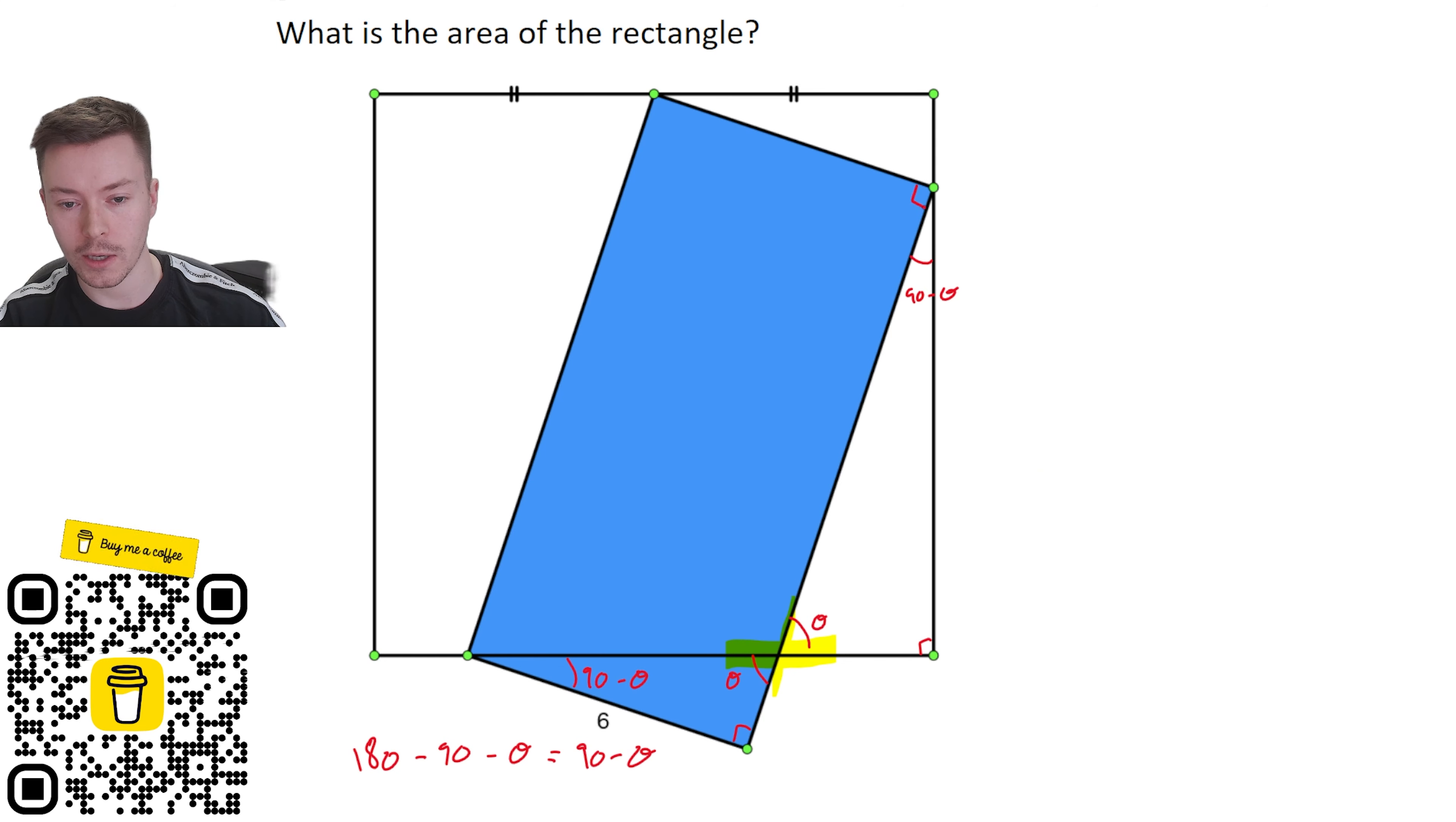Now we've got another right angle here and so can I work out this angle? Well I can, because angles on a straight line are 180 degrees. So we've got 180 minus 90 for the right angle minus 90 minus theta. Well that gives us, well 180 minus 90 is 90 degrees. 90 minus 90 degrees is zero and then we subtract minus theta which gives us positive theta and so this is theta degrees here.